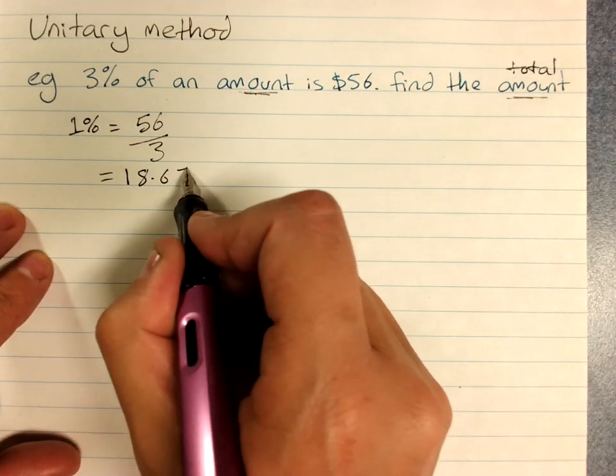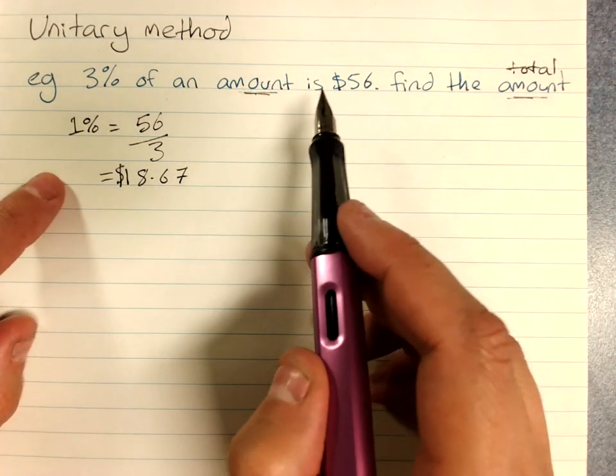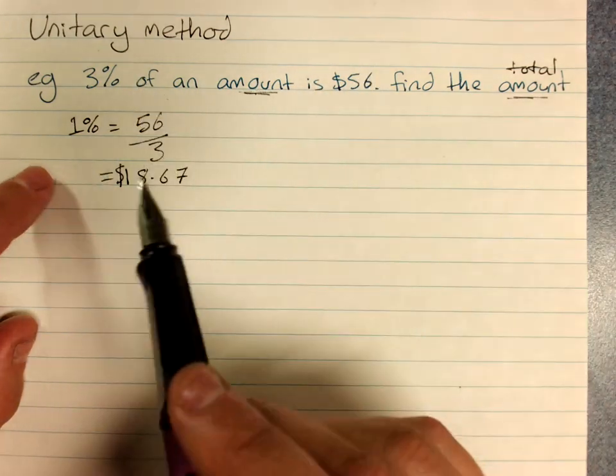Because it's money, put that in. Now we've found 1% by doing the amount divided by the percentage.